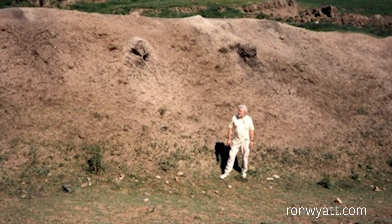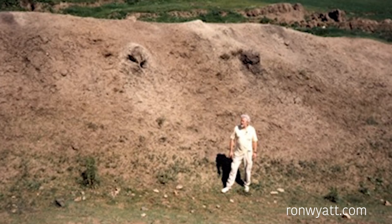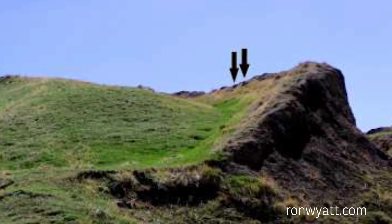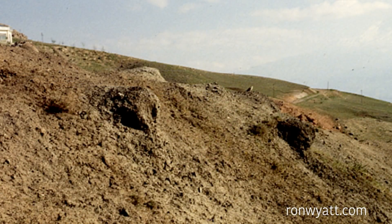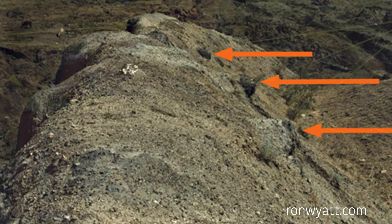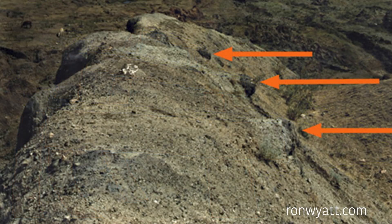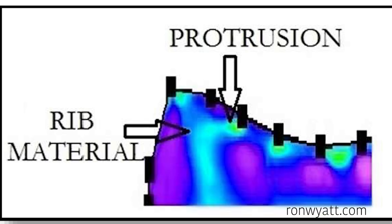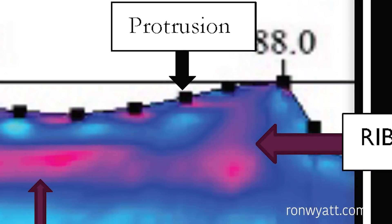Ron Wyatt used to point on the inner side of the ship's hull to a series of equally spaced protrusions, which are projected at 90 degrees from the outer edge of the hull towards the inside of the ship. He believed these were deck joists which once held a floor or ceiling of some type. The scans revealed that these protrusions were of the same resistivity as the apparent rib material, and that they extended back into the hull and connected directly to the adjacent rib, exactly as Ron believed.